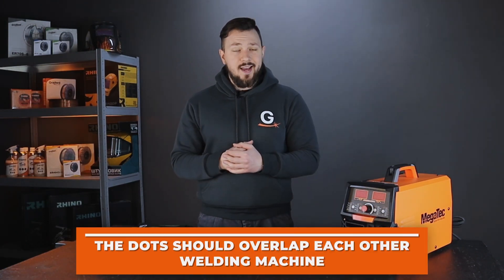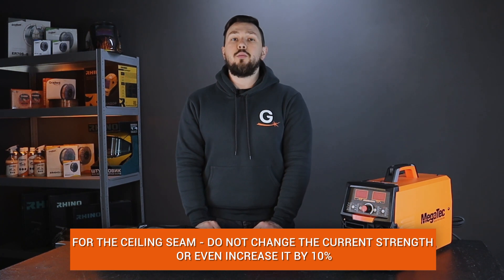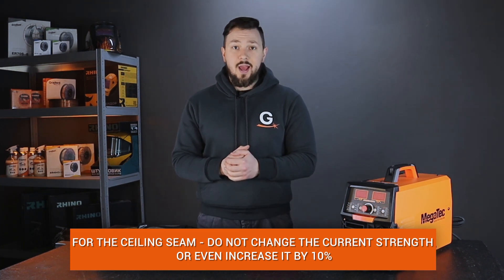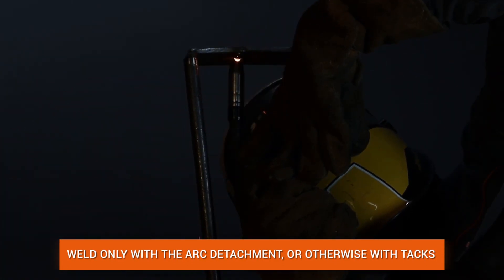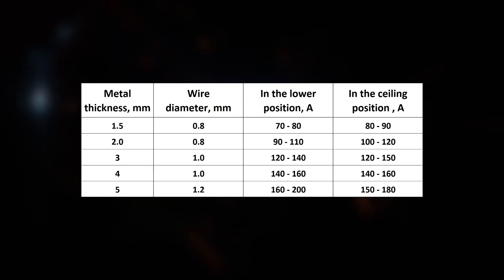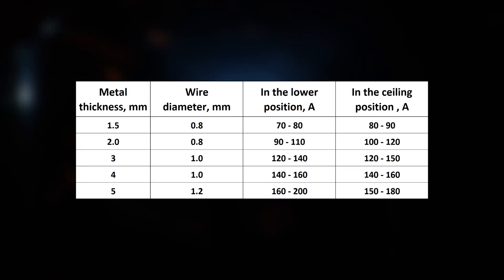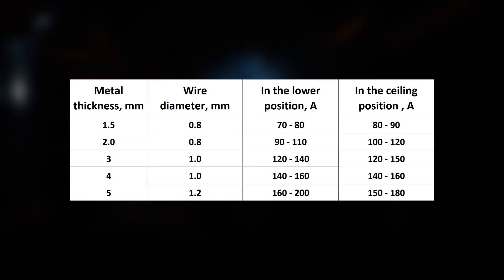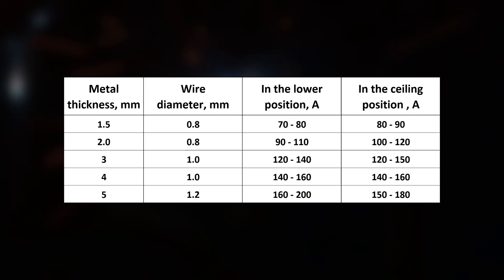Let's move on to semi-automatic welding. To weld a ceiling seam, we recommend setting the current to the same value as for welding in the lower position or even increasing it by 10%. This is to prevent the metal from spreading during welding, but in general, the settings will depend on the welder's skills. For novice welders, we have prepared a table that can be used to set the current strength for welding a vertical seam.